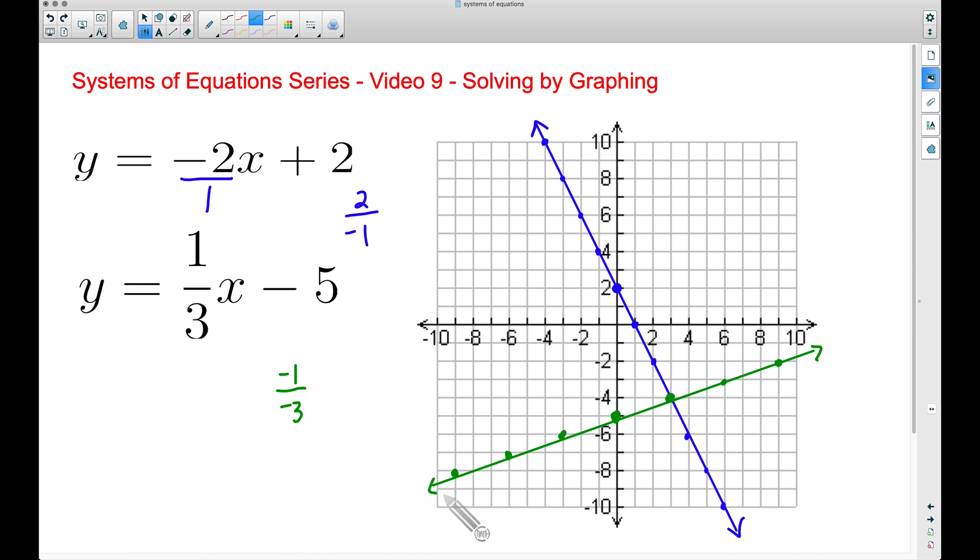So we have our two lines and what we're really interested in here is the intersection. This ordered pair where these two lines cross. That is our solution. That ordered pair is going to be 3, negative 4. 3 is our x value. Negative 4 is our y value.